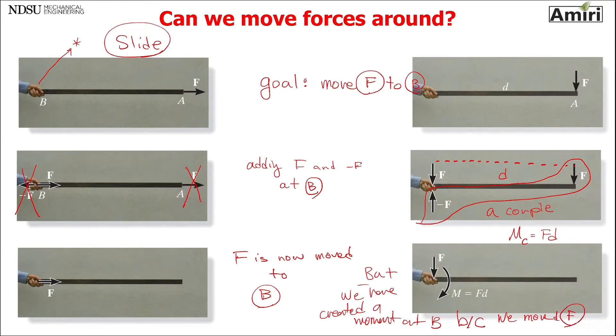So in both of these cases, case A, case B - not a very smart choice of letters because there are A and B in figures, but anyway you know what I'm saying - we both moved force F. So why did one of them was really easy, we slide it, and one of them created a moment because we moved it? Because on case B, we didn't slide it. We didn't move it on its line of action.